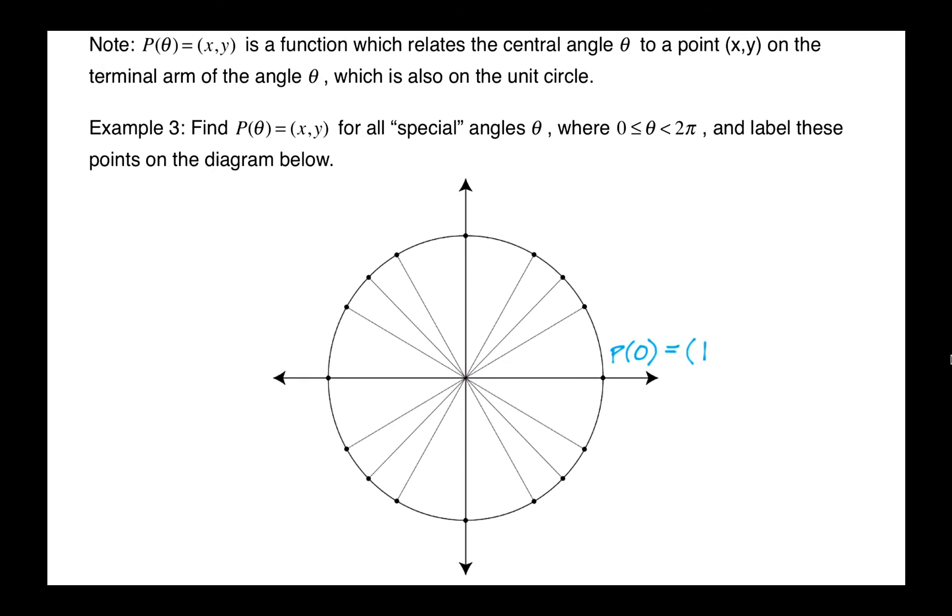For instance, P of 0 is (1, 0). That one's pretty straightforward. P of pi over 6 is equal to root 3 over 2 and 1 half.